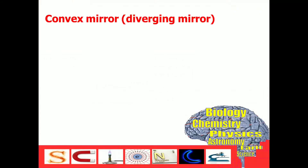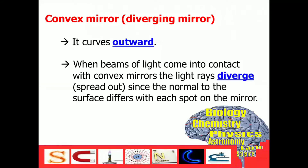What is a convex mirror? A convex mirror is also called a diverging mirror. You just have to remember that it has an outward curve. It is called a diverging mirror because it spreads out the light rays that come in contact with it.